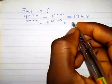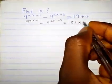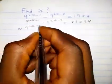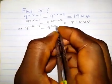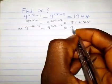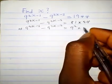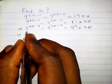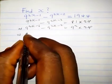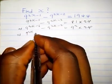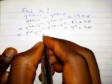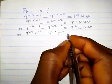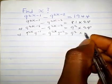1944 can be written as 81 times 24, which implies 9^(2s-1) minus 9^(2s-2) equals 9^(2s-2) times 24. This can be written as 9^(2s) times 9^(-1) minus 9^(2s) times 9^(-2) equals 9^(2s-2) times 24.